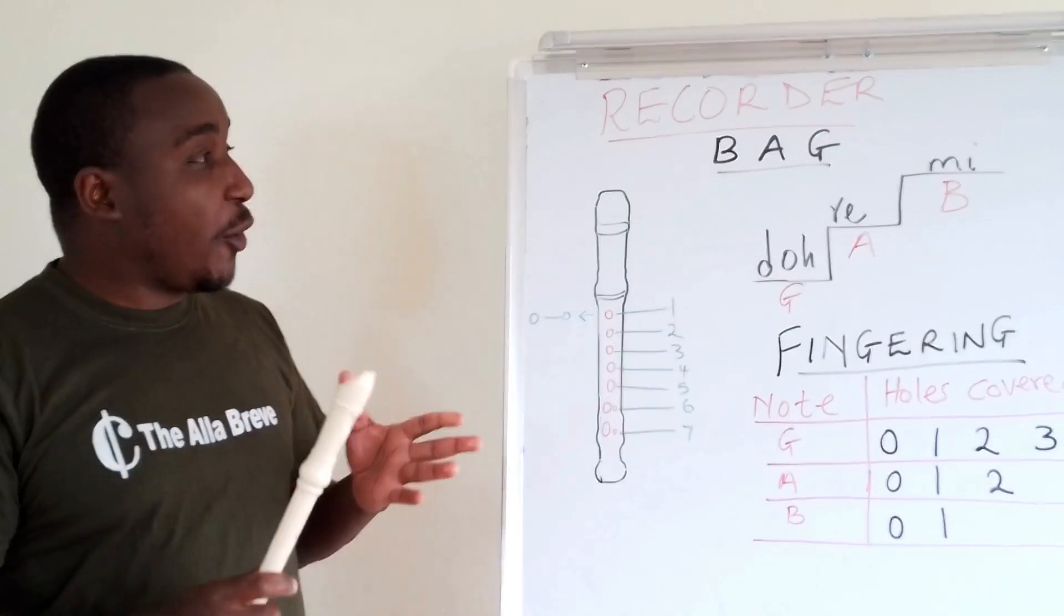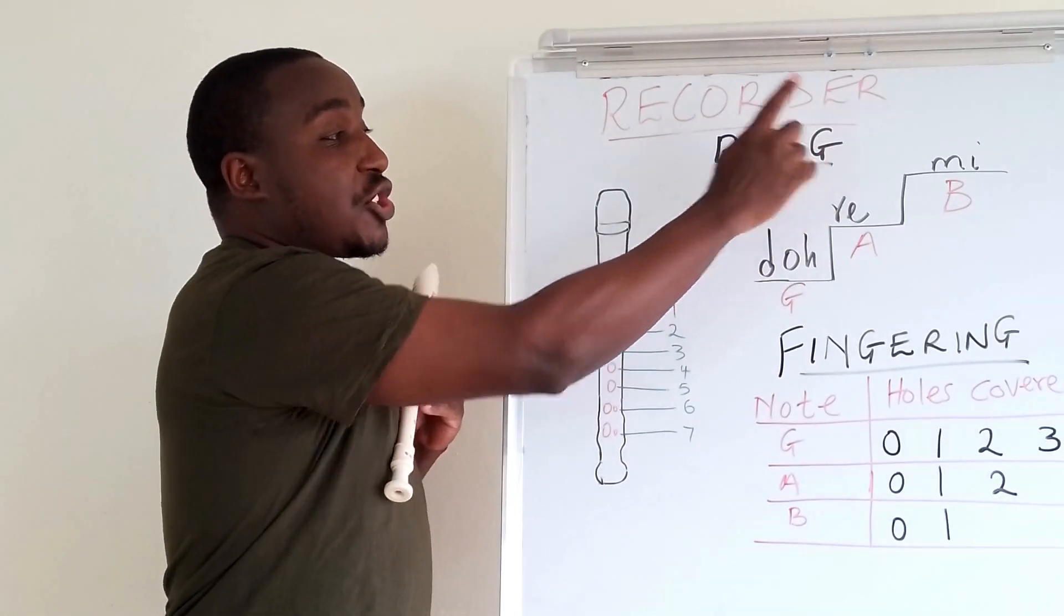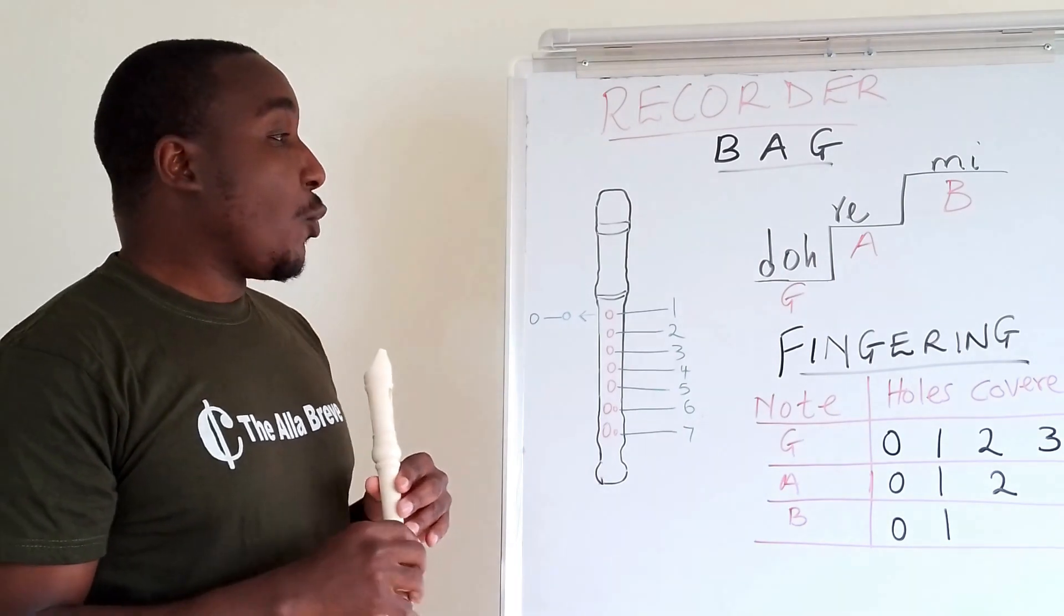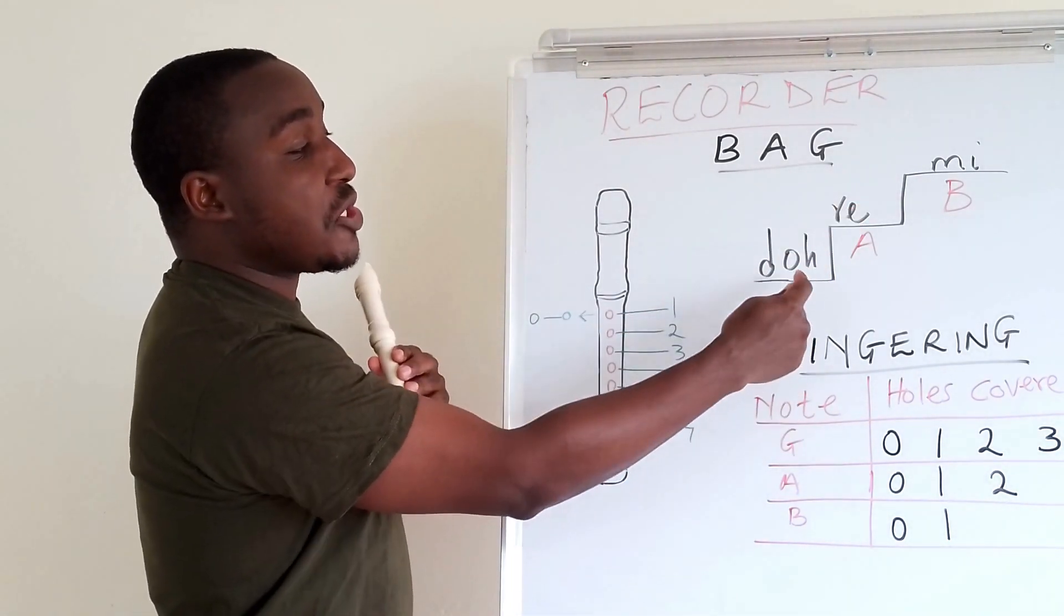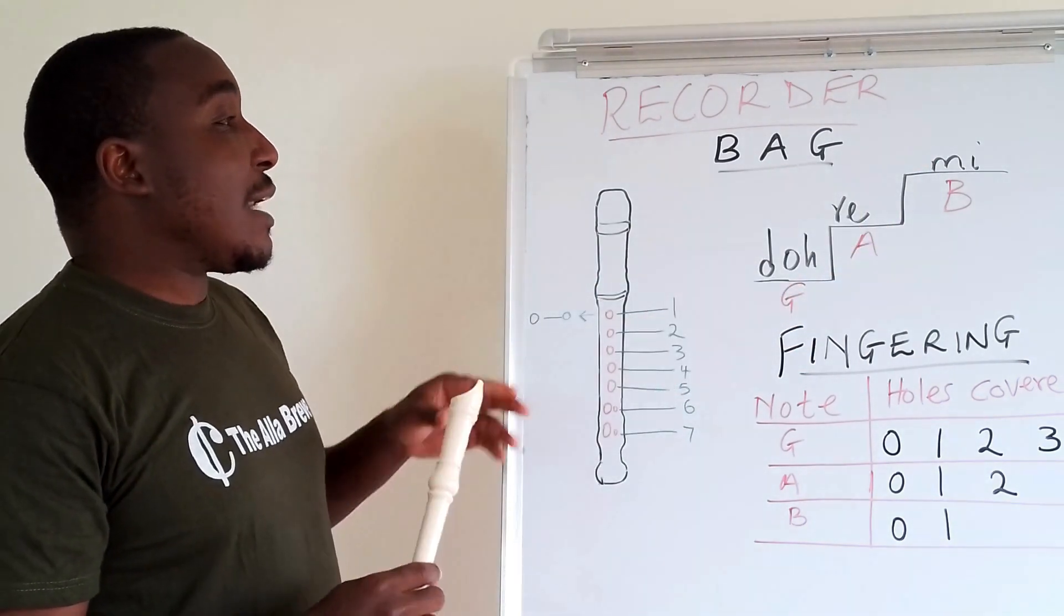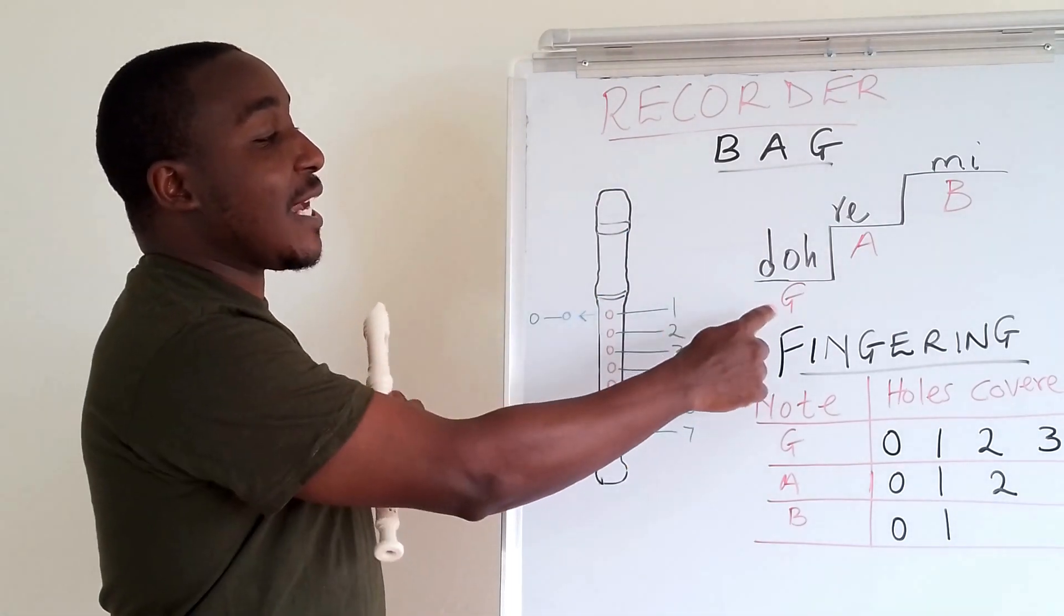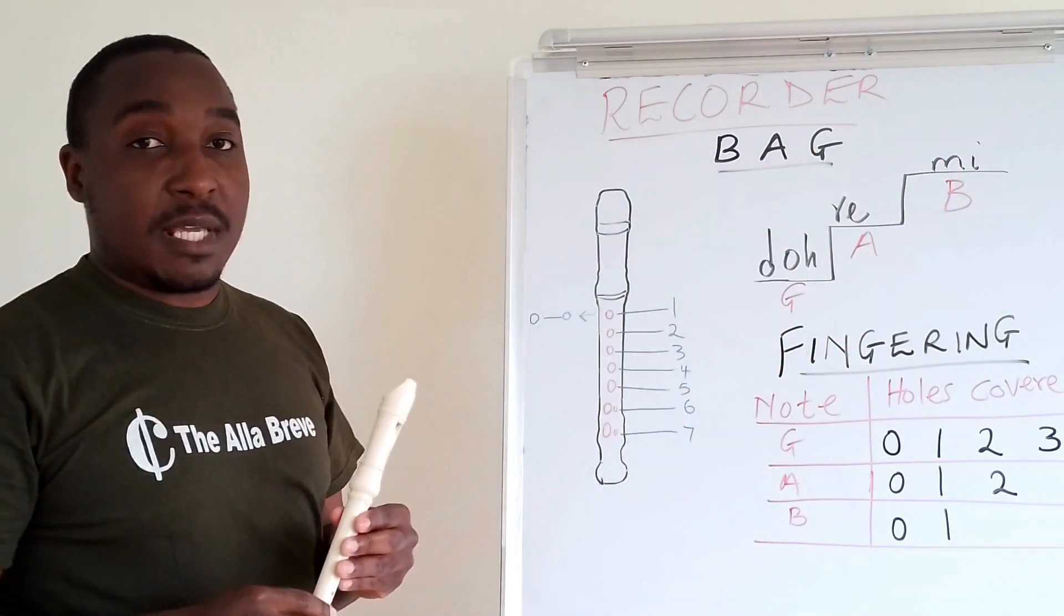So, in grade 4, they learn about note B, note A and note G. In the previous lesson, we learned about the solfege sounds DO, RE and MI. And therefore, when we learn about B, A, G, we will use G as DO, A as RE and MI as B.